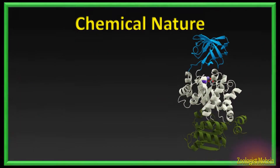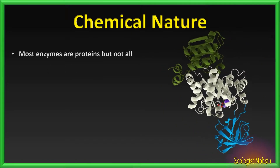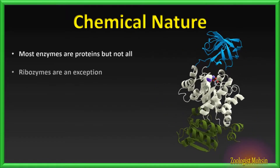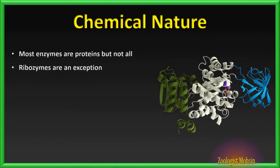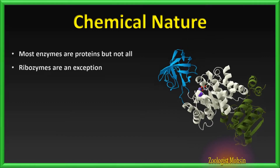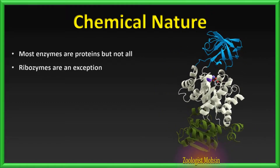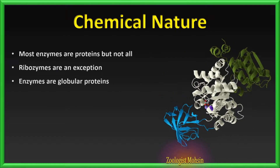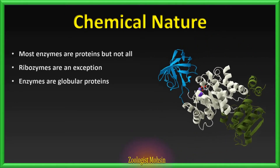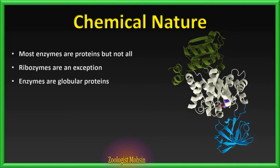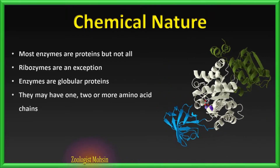What about the chemical nature of enzymes? Most enzymes are proteins, but not all. For example, ribozymes are enzymes which are RNAs and not proteins, which help in synthesis of proteins in ribosomes by joining amino acids. Enzymes in three-dimensional structure are globular in shape, meaning chains of amino acids are folded together making a sphere. Chains may vary from 1, 2, 3, 4 and so on.